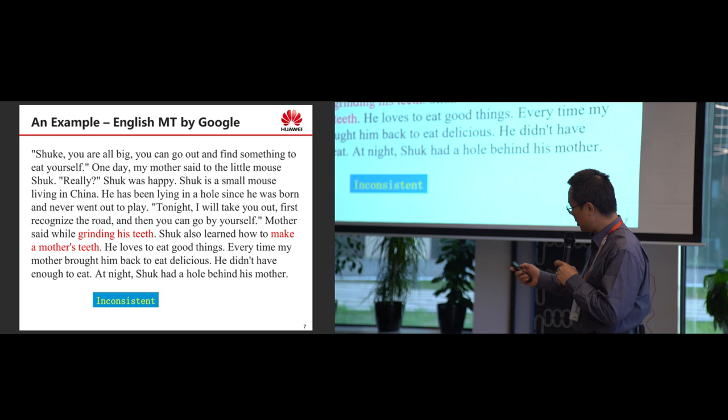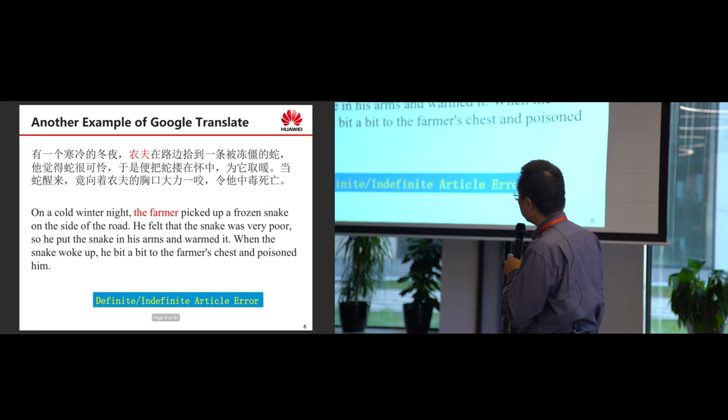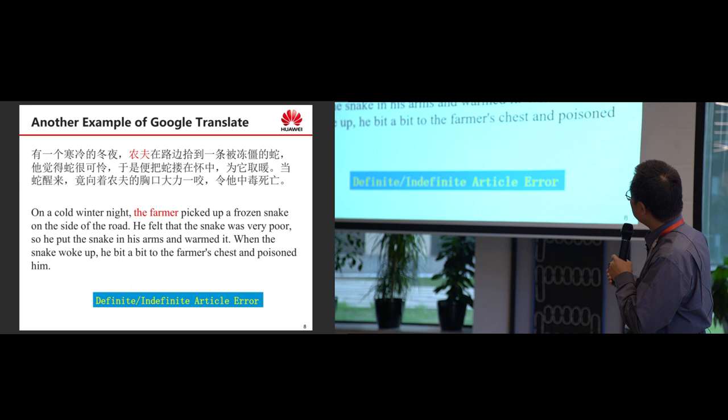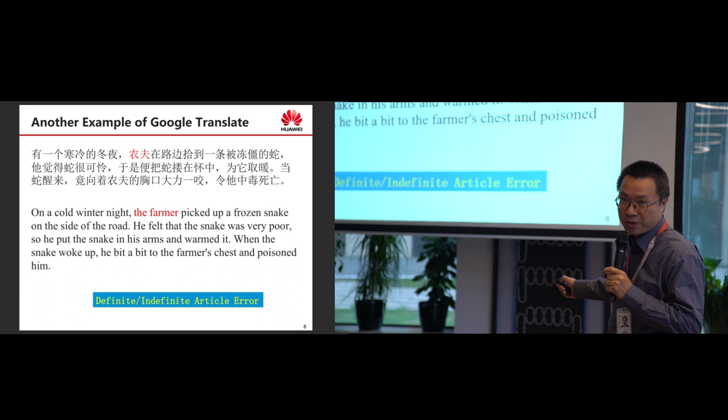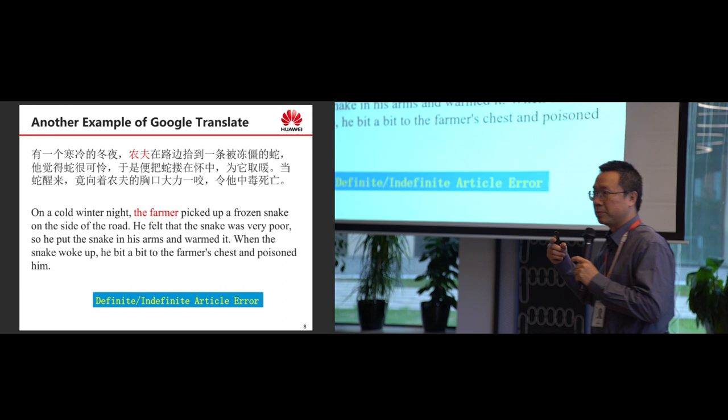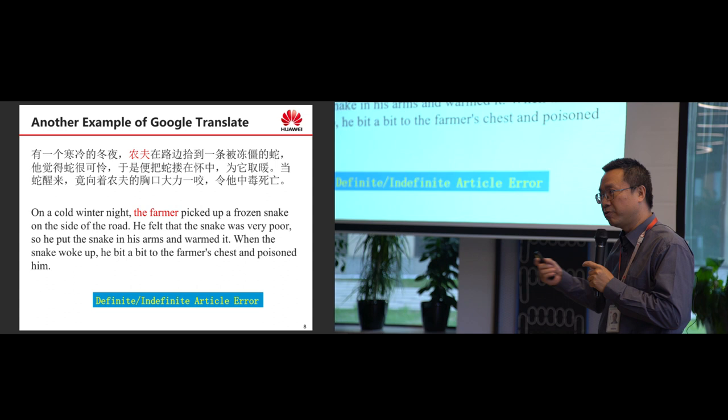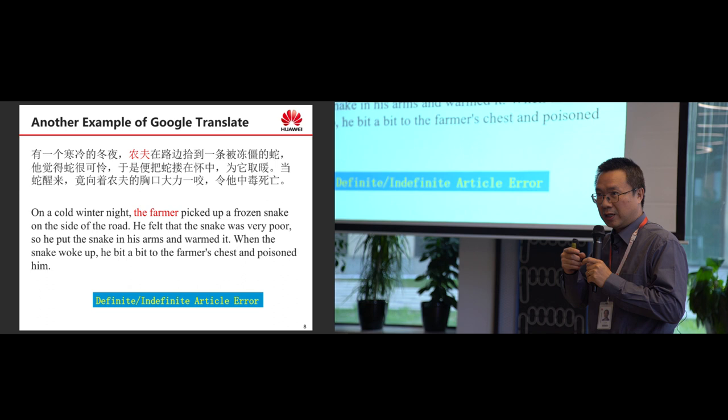Here is another piece of translation about a farmer and a snake. When we first mention a person, we should use 'a farmer,' not 'the farmer.' You can see there are so many different errors in this machine-translated document. If you examine the text at the document level, you will find a lot of errors.